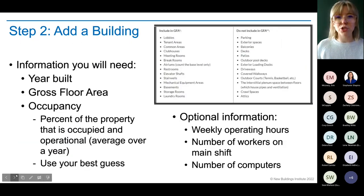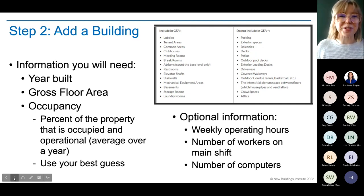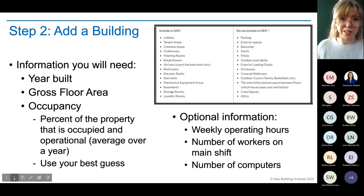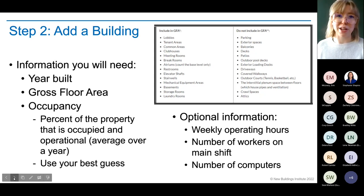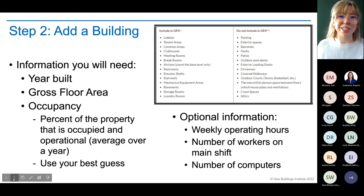In terms of information you'll need: having it ready makes adding buildings much easier. You'll need to know the year your building was built and the gross floor area. The screenshot shows what to include in that gross floor area and what not to include — balconies, patios, driveways, and parking would not be included. The reason they ask for this is to help calculate energy use intensity. You're not air conditioning your patio, so those spaces are excluded.